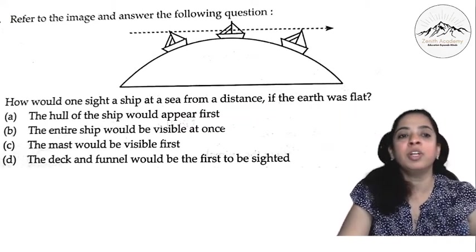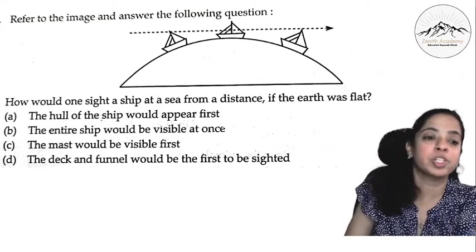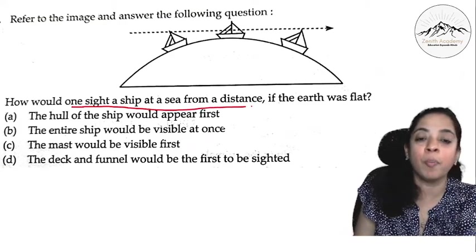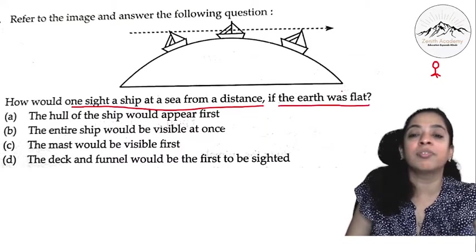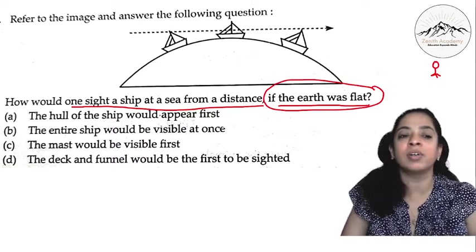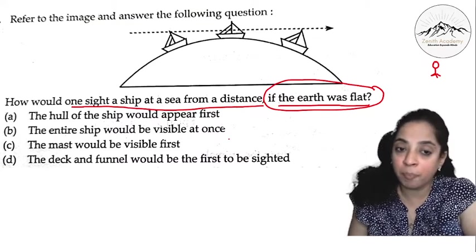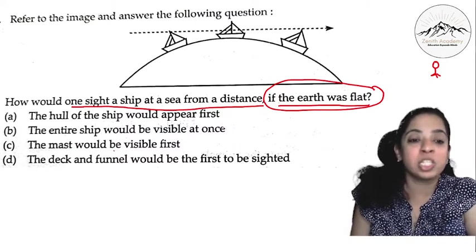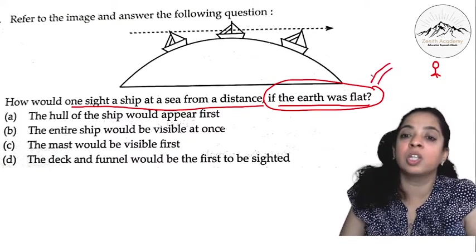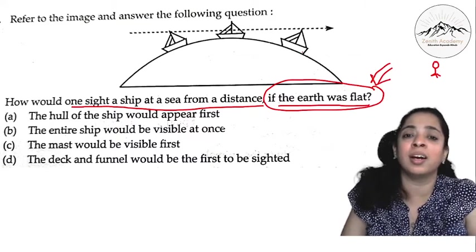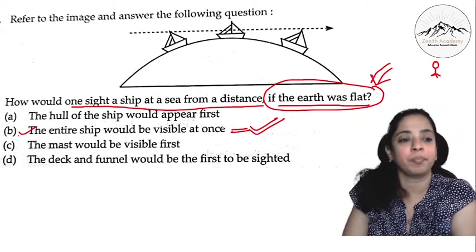So this is how when the earth is a sphere. But look at the question. How would one sight a ship at sea from a distance? If someone is seeing a ship from a distance, if the earth was flat, how would have one sight a ship at sea from a distance? The hull of the ship would appear first, or the entire ship would be visible at once, or the mast would be visible first, or the deck and the funnel would be the first to be sighted? So since it is asking if the earth was flat, don't get confused by this diagram here. The earth is not flat. So if the earth was flat, the entire ship would be visible at once. This is the correct answer, B.